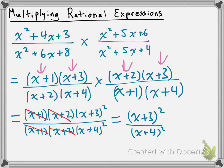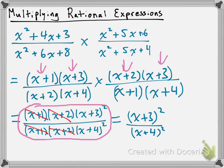The only thing we need to do now is state our restrictions. We want to make sure we're looking for the restrictions of both the original rational expressions. That means we need to find which x values are going to make our denominator equal to 0. Looking at the line where everything is factored and brought together — before canceling — our denominator tells us we have a problem when x equals negative 1, when x equals negative 2, and when x equals negative 4. So our restrictions are x does not equal negative 1, negative 2, and negative 4.